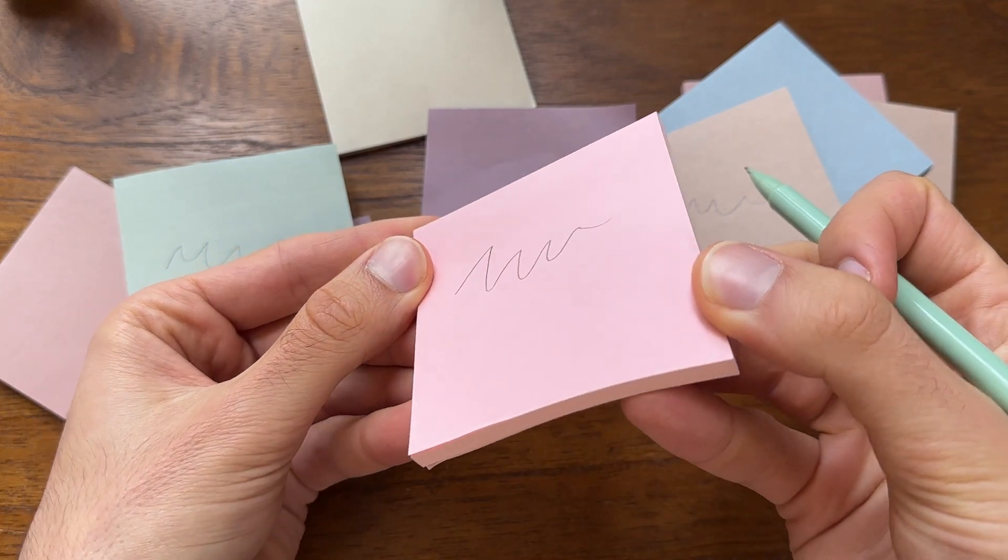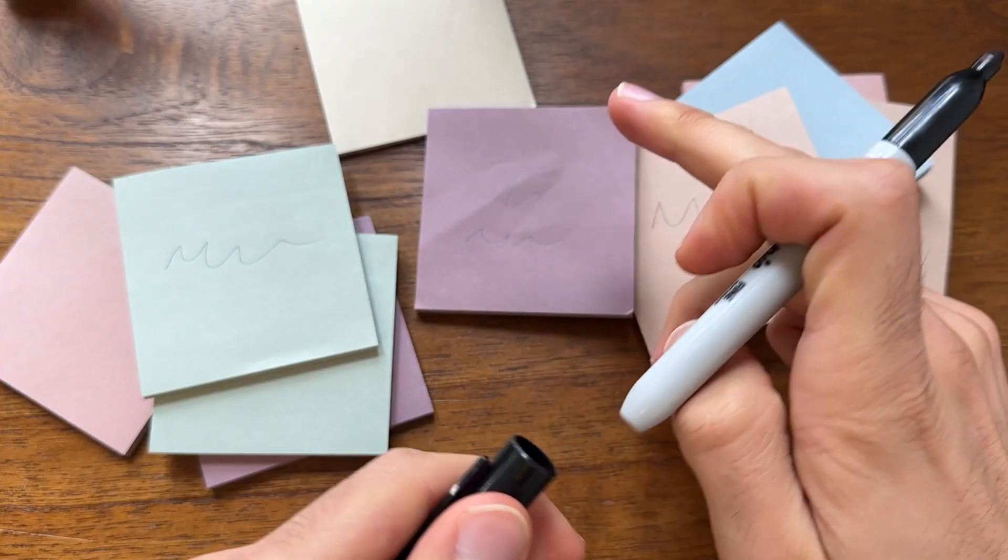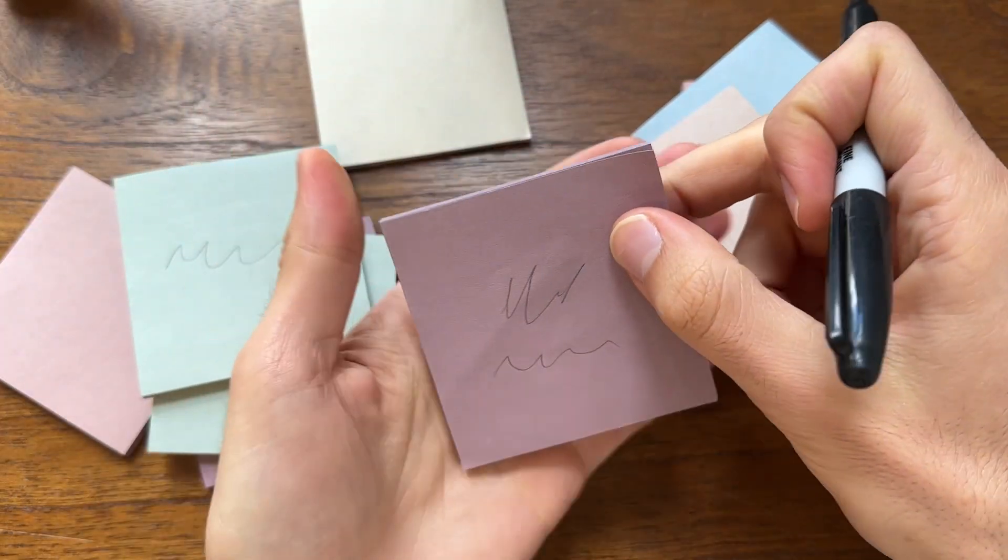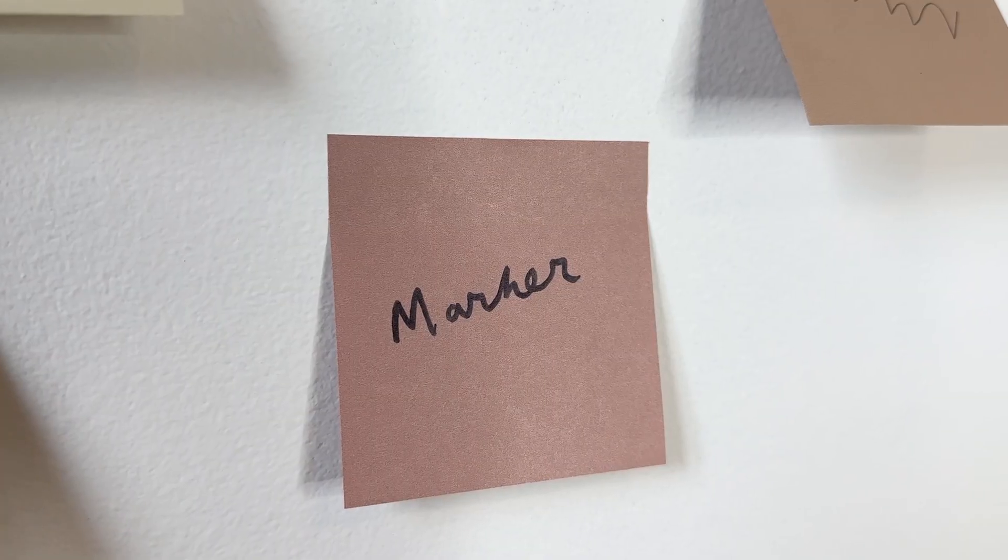I can't help but notice, on the classic post-it note here, there isn't as much of that glare effect. So if you do want writing to stand out more, obviously using a bold marker will work super well, and then that text is super readable on these post-it notes.